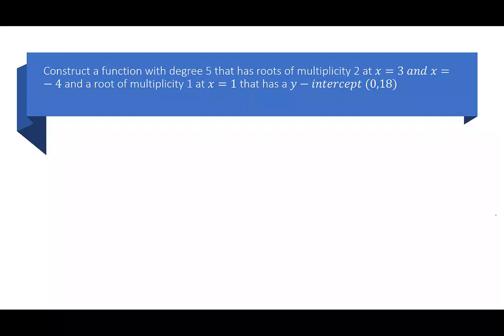We also know that the y-intercept is (0,18). So this feels kind of like the same thing, except before we were pulling all of this information out of the graph. Now I'm just giving it to you. So we can start with f(x) equals a, because I don't know the leading coefficient.